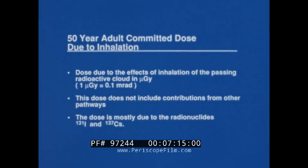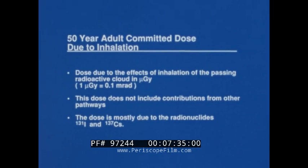The following will be the contour lines for the 50-year unmitigated committed dose due to the effects of inhalation of the passing radioactive cloud in microgray — one microgray being the equivalent of one-tenth of a millirad. This dose does not include contributions from other pathways and is mostly due to the radionuclides iodine-131 and cesium-137.